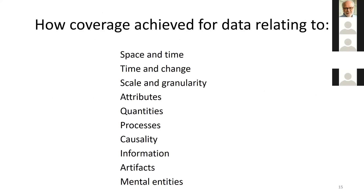The way we addressed this was to create a list of kinds of data, since ontologies primarily use terms to tag data. So an ontology seeking to be validated as a top level ontology has to show it can handle data pertaining to all of these different kinds of things — space, time, change, scale, and so forth. This is the criterion that we adopted.